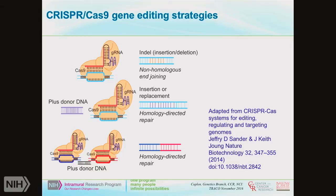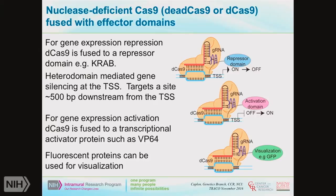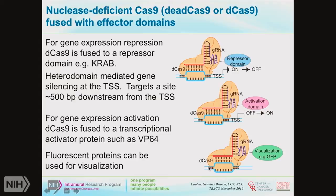Other ways of using Cas9 involve fusing it to a factor domain so that you're using it purely as a genome locator. Groups typically make use of a dead Cas9 — a nuclease-deficient Cas9 — and there are many different flavors of those. They can be fused to a repressor domain such as KRAB, which locates next to a transcriptional start site to repress transcription, usually targeting a site about 500 base pairs downstream of the transcriptional start site. You can activate transcription using something like VP64, or use it for visualization by linking to a fluorescent protein such as GFP.